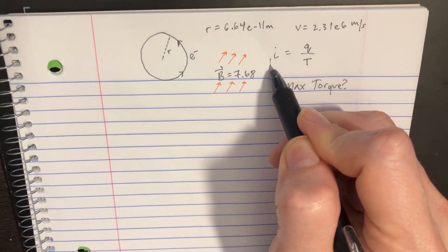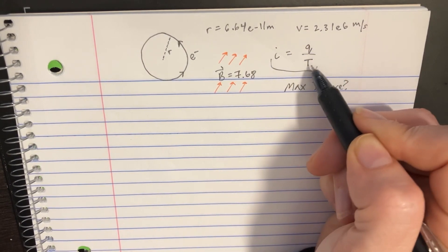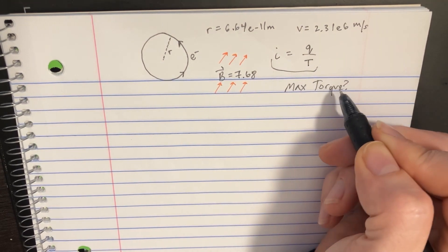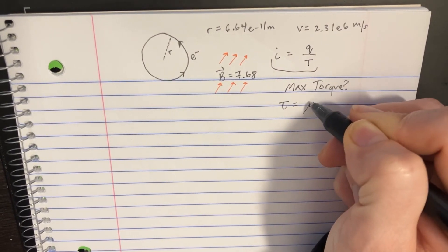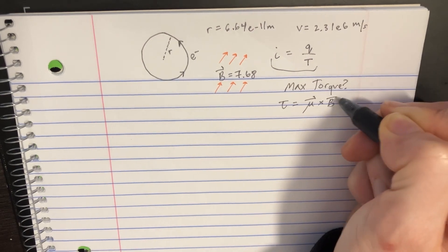We're also given that the current equals the charge divided by the period. If we're trying to find max torque, we use the equation that torque equals the magnetic moment crossed with the magnetic field.